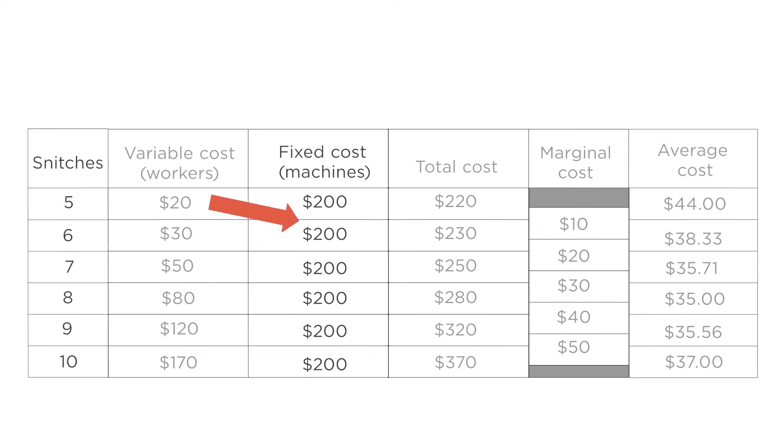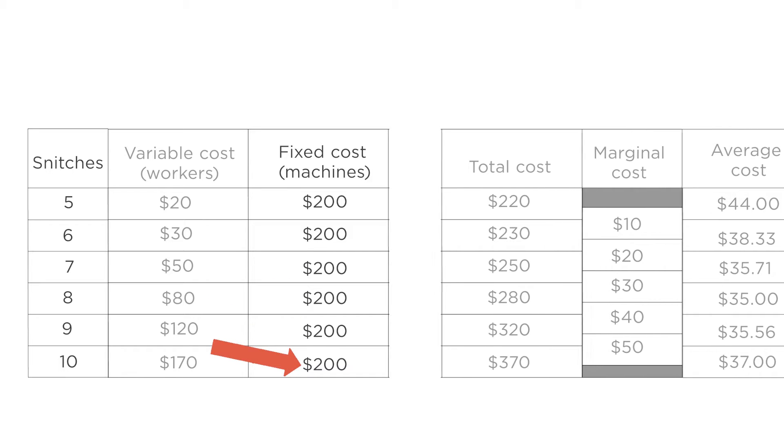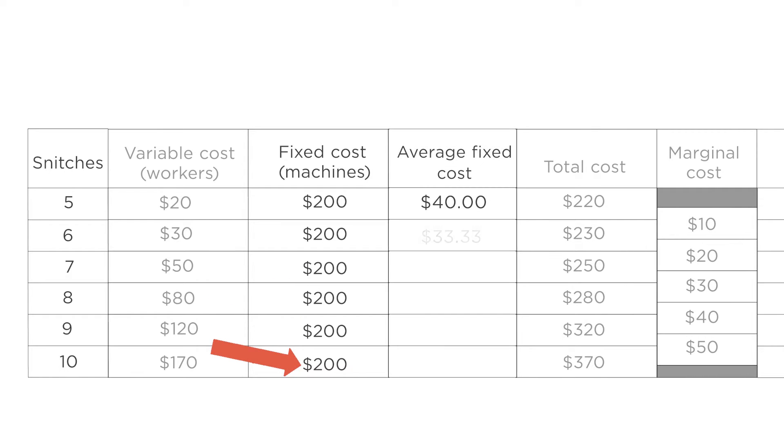The reason is that the average total cost curve reflects two competing forces as production increases. First, as production increases, the average fixed cost is falling. Average fixed cost is the fixed cost divided by the quantity of output. Since the fixed cost is the same regardless of production level, as the firm produces more snitches, the average fixed cost falls.